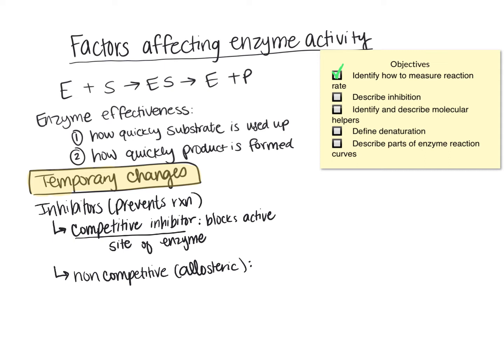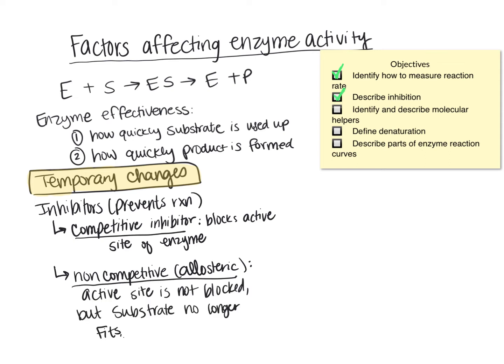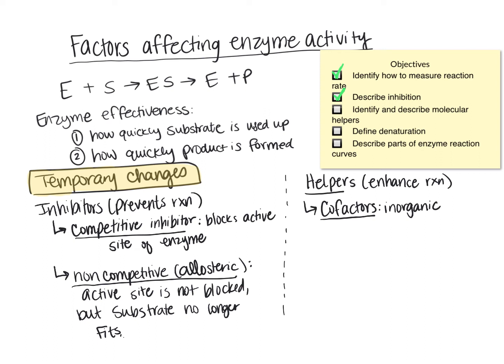The second type of inhibitor is called a non-competitive or allosteric inhibitor. In this case, the active site is not blocked, but the shape of the enzyme has changed — more specifically, the active site may have changed its shape and is no longer able to fit with the substrate. Now, a cofactor is going to help an enzyme, and it is usually an inorganic molecule. Cofactors are usually part of the enzyme itself and can only be removed when you denature the enzyme.